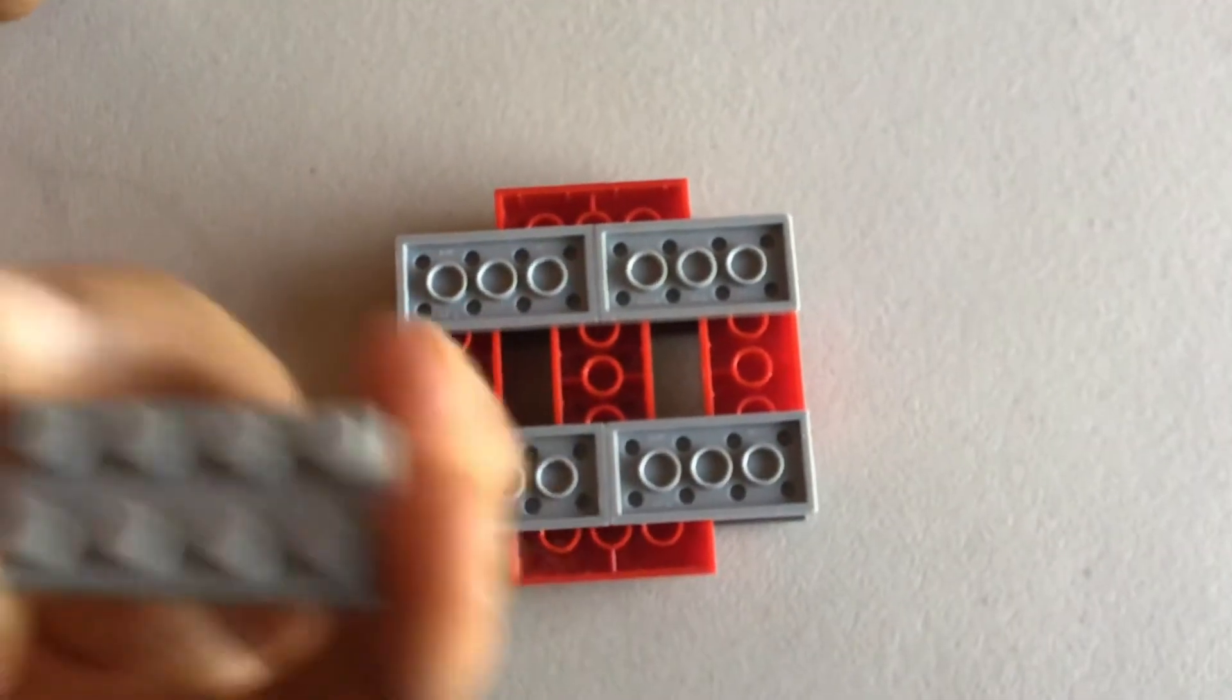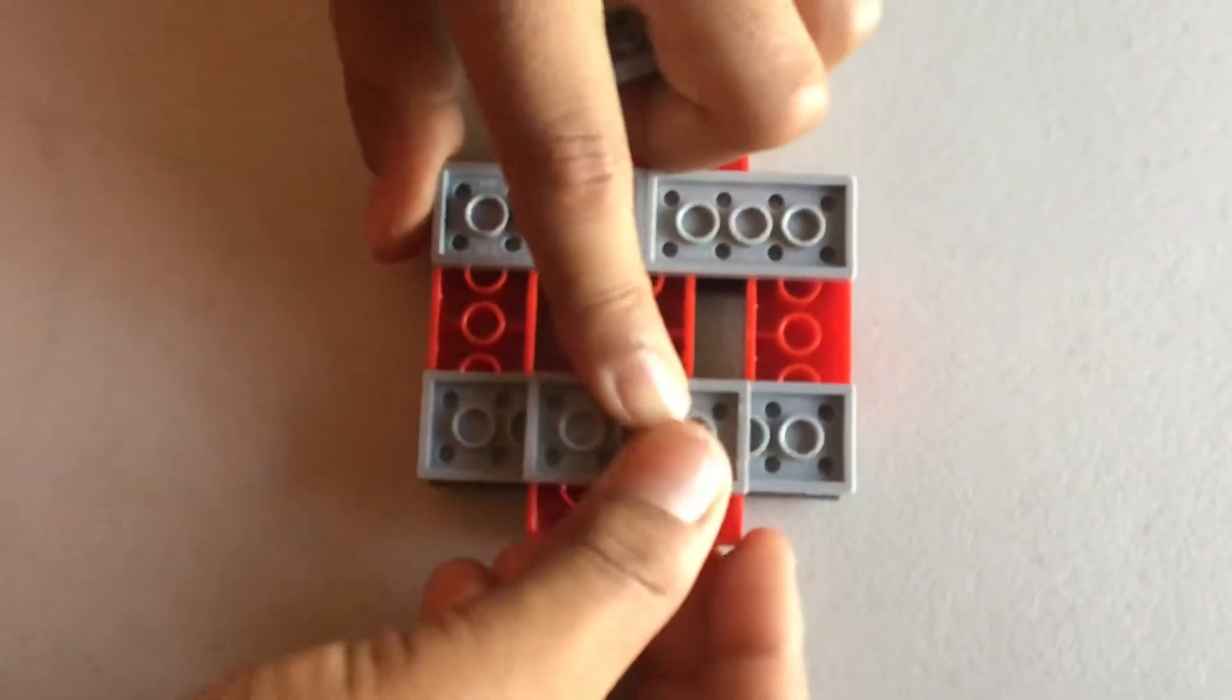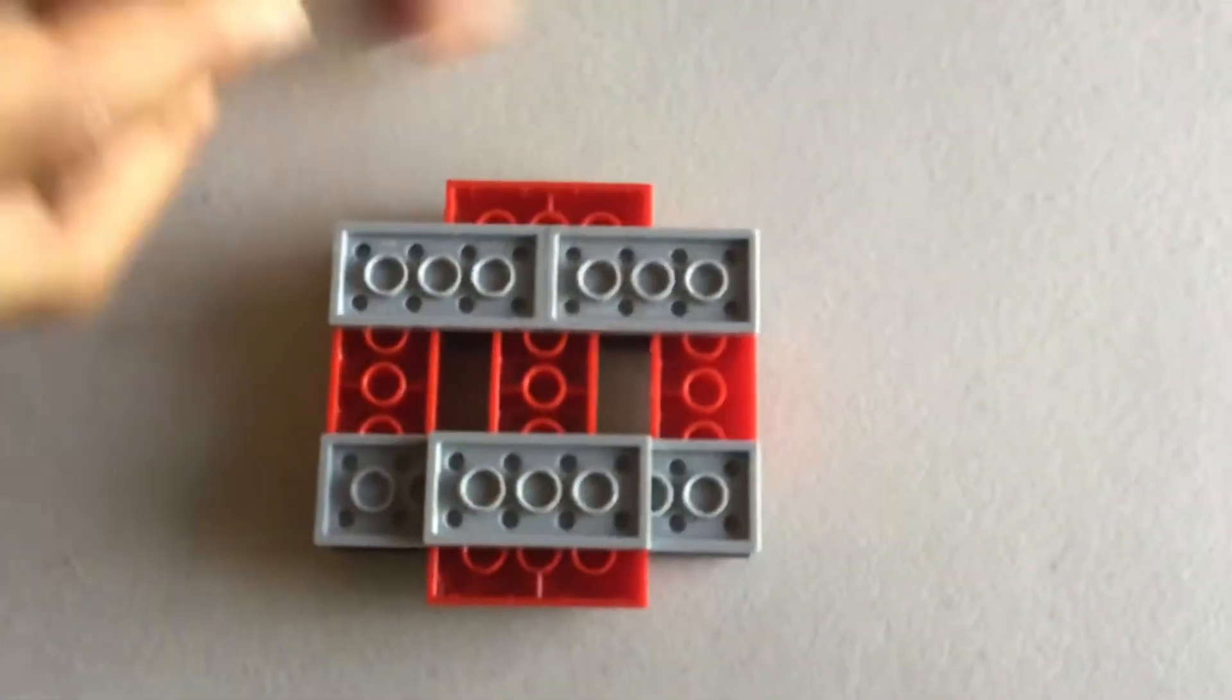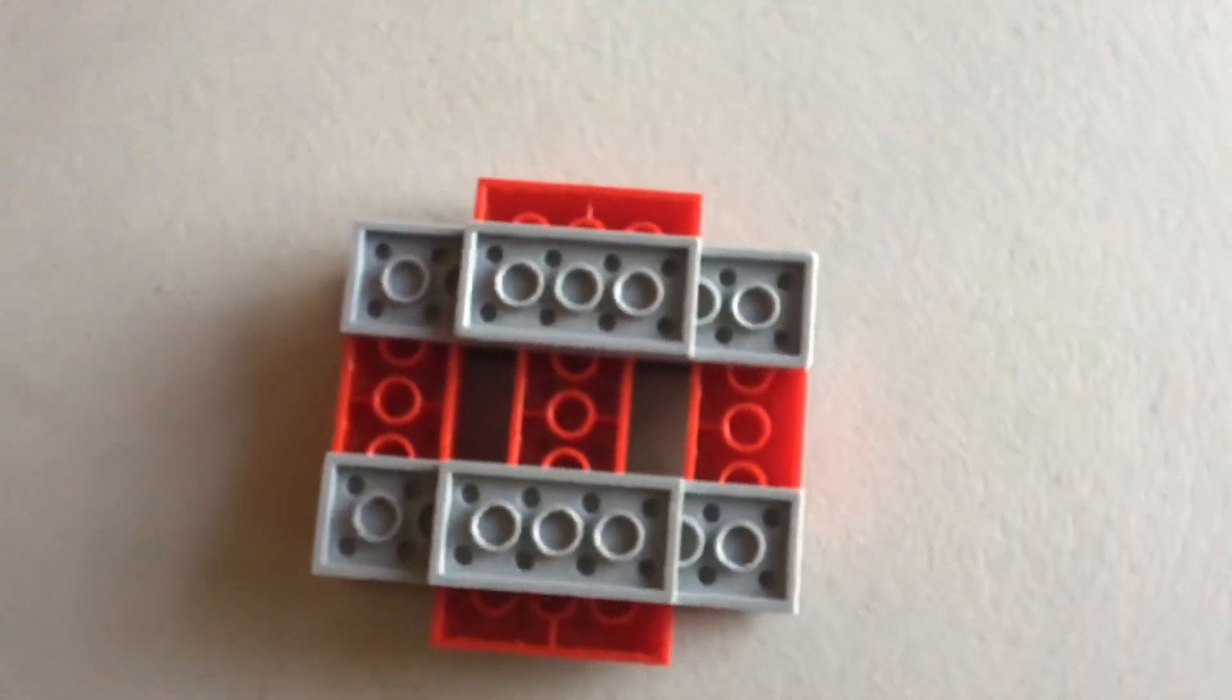Place it right in the middle. Then you want to take a 2x2 rounded brick and take one more and place it on top.